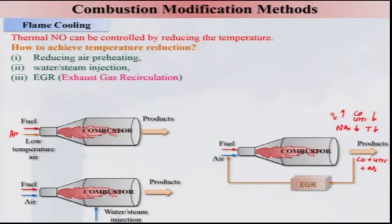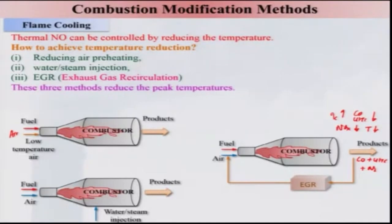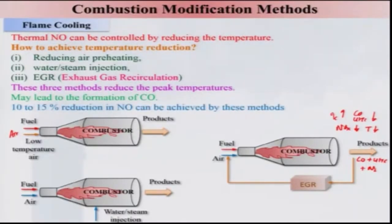Exhaust gas recirculation (EGR) recirculates product gases containing CO and unburnt hydrocarbons back into the combustion system, where they mix with air and are burnt again. CO converts to carbon dioxide, unburnt hydrocarbons are oxidized, combustion efficiency increases, CO is reduced, and NOX is also reduced because the recirculated nitrogen-containing gases lower the peak temperature. These three methods — reduced air preheat, water/steam injection, and EGR — achieve roughly 10–15% reduction in NO and are used profusely in practical combustion systems.